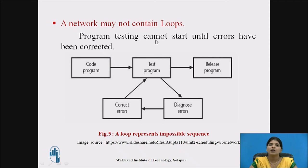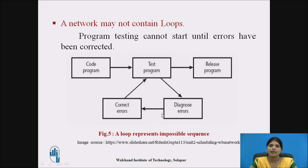The next rule is that a network may not contain loops. Here the network contains a loop — test program cannot start until the errors have been corrected. The problem is we do not know how many times the loop will be executed. So instead of looping, we have to draw a sequence of activities.